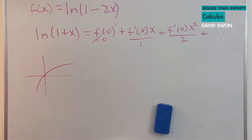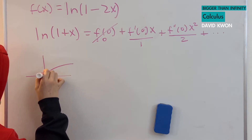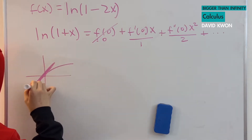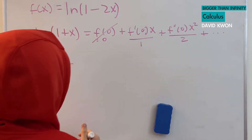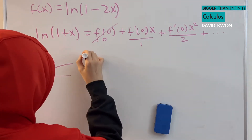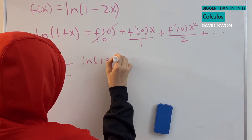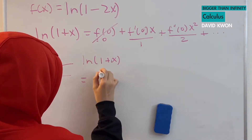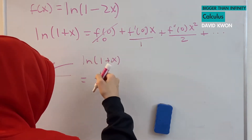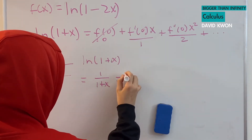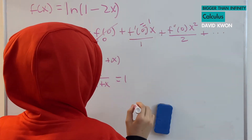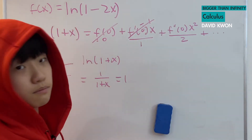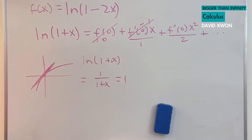And f'(0) — it is asking when x is equal to 0, what is the slope? That looks to be 1, but we can't just say that just because it looks like it. That's why I will differentiate ln(1 + x), which gives 1 over (1 + x), and when I put in 0 for x, I get 1. So f'(0) = 1, which means that coefficient can just stay as x.